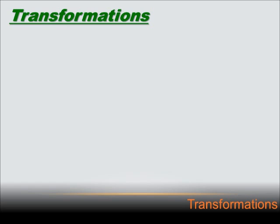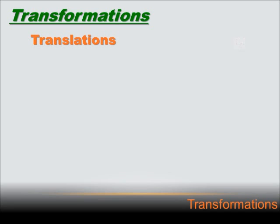Obviously this is a math class, so we're going to look at geometric figures, not pictures all the time. These transformations relate to geometric figures as well. For instance, translation — that's just where we slide the figure, we don't turn it or rotate it. I've got two triangles on this coordinate plane, and the first and second are identical. All I've done is slide it down to its new position.